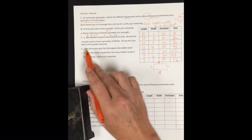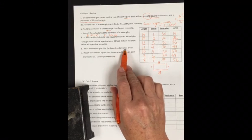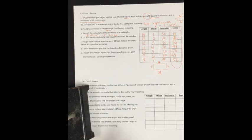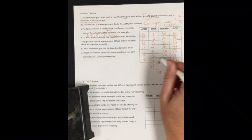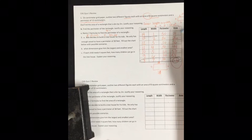What dimensions give him the largest and smallest areas? For the largest area, I'll look under area. The largest would be if the rectangle was 8 by 7, giving an area of 56, the biggest number here. The smallest area would be 14 by 1, with area of 14.